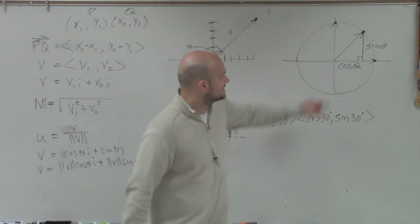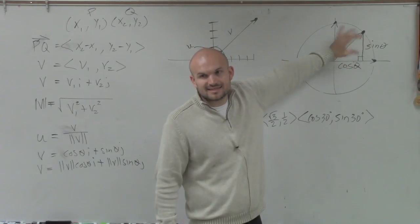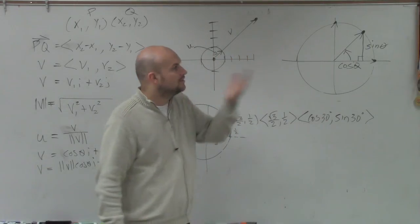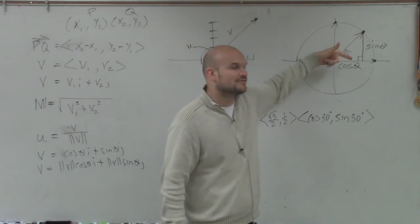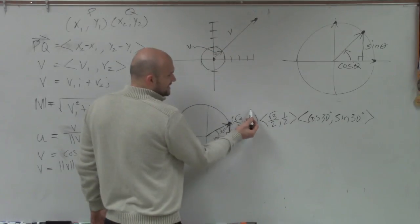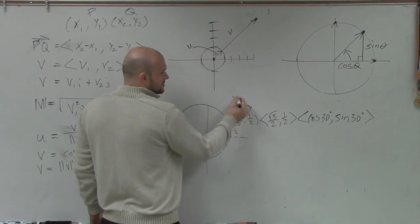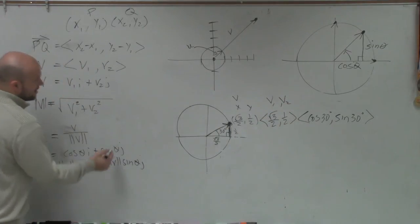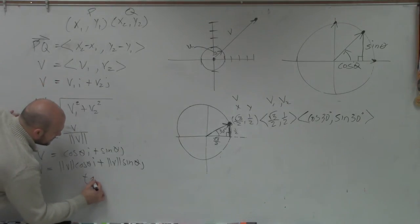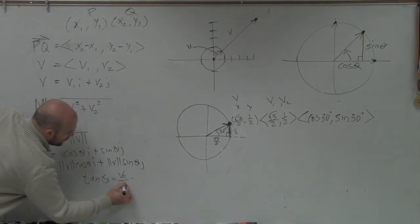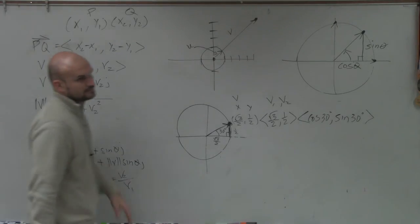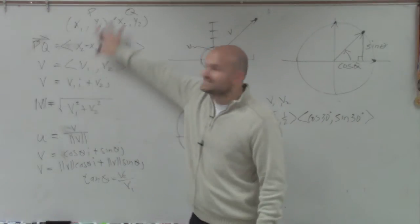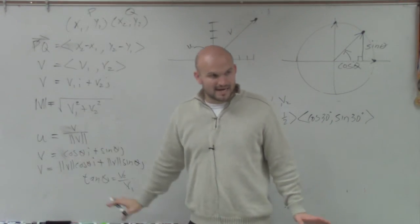The last thing I want to talk about was, what if actually I wanted to find the theta, the actual angle? What if I want to find the angle of that? Well, to find the angle, you have to do the opposite over your adjacent. So you have to take the opposite over your x. Or in this case, it'd be v1 and v2. So, the last thing we need to talk about was how to find the angle, which would be tangent of theta equals v2 over v1.